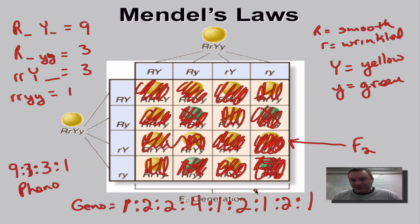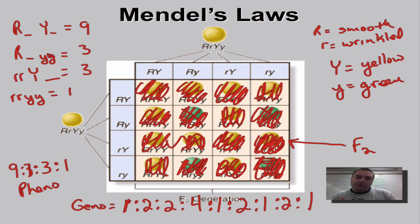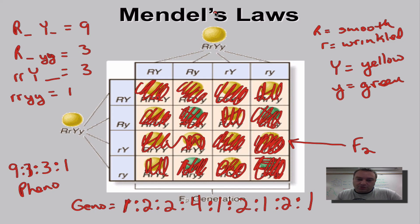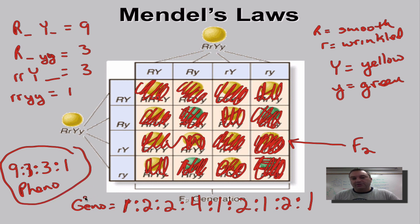We're never going to try to figure out that genotype ratio again because it's ridiculous — we'll just stick with the phenotype ratio. That is how you do a dihybrid cross. Just like Mendel did: the first set of parents were opposite purebreds, the F1s were all hybrids, you crossed the hybrids to get the 16-box Punnett square. When you cross two hybrids in a dihybrid cross, you'll always get a 9 to 3 to 3 to 1 phenotype ratio. Until next time!